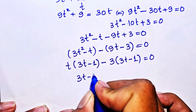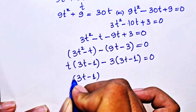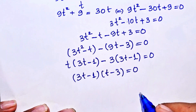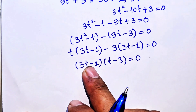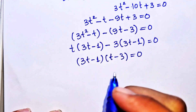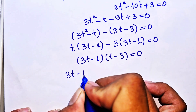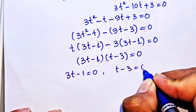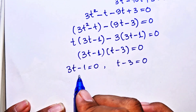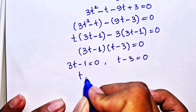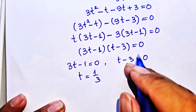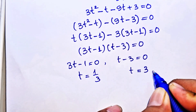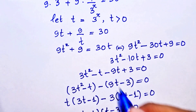We get (3t − 1)(t − 3) = 0, which gives us t = 1/3 or t = 3.